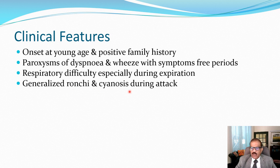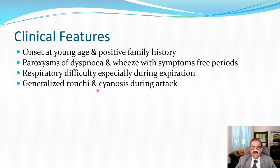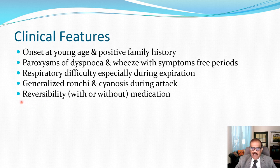On examination, generalized ronchi are heard — when you auscultate the lungs from front or back, apices, bases, and middle zones, you hear ronchi on both sides. There may be cyanosis during an attack; cyanosis is a blue discoloration of skin and conjunctiva and mucosal surfaces. In asthma, if cyanosis occurs it would be central cyanosis. Reversibility is a very important clinical feature.